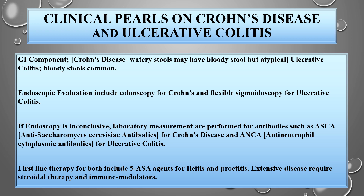If endoscopy is inconclusive, laboratory measurements are performed for antibodies — ASCA, which stands for anti-Saccharomyces cerevisiae antibodies for Crohn's disease, and ANCA, which is anti-neutrophil cytoplasmic antibodies for ulcerative colitis. First-line therapy for both includes 5-ASA agents for ileitis and proctitis; extensive disease requires steroidal therapy and immune modulators.